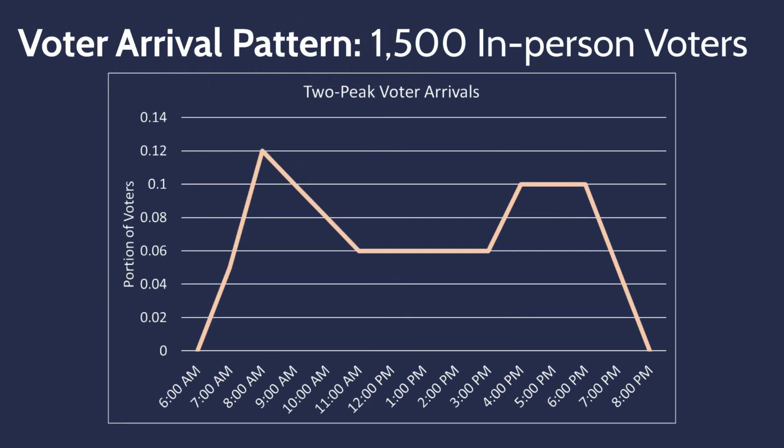To simulate this voting process, we assume that 1,500 voters turn out to the polling location following the arrival pattern shown on screen. This arrival pattern represents a large number of arrivals in the morning, arrivals decreasing at midday, and increasing in the afternoon.